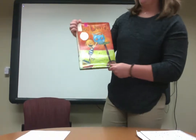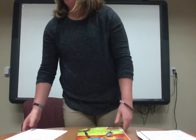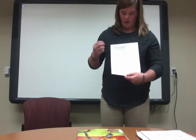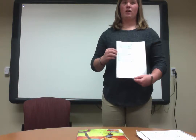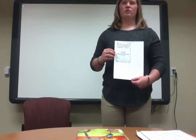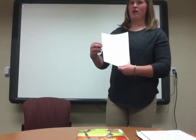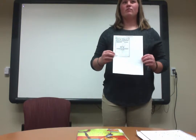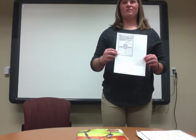Alright. So that is the book No David. Together, let's figure out how we can fill out this book talk. Who was the main character again? David. And the setting? His house, outside — he was also at school. Okay, what was the problem? He was muddy in the house. He was always doing something wrong.